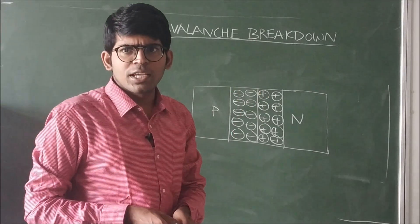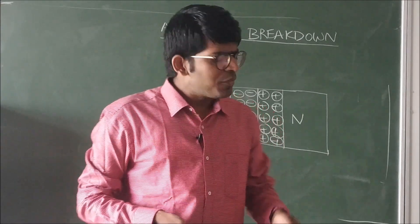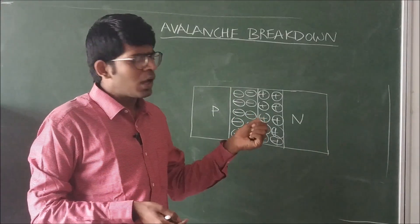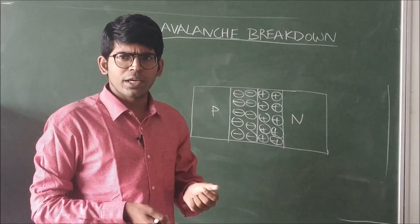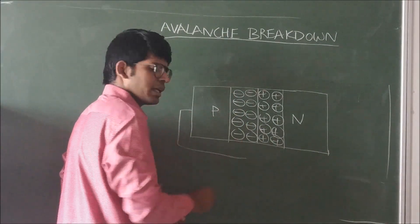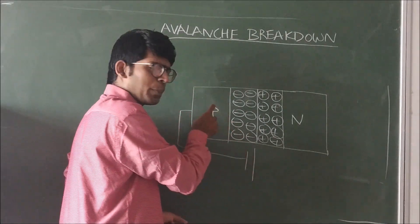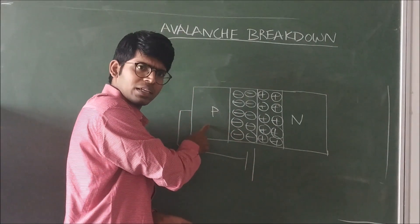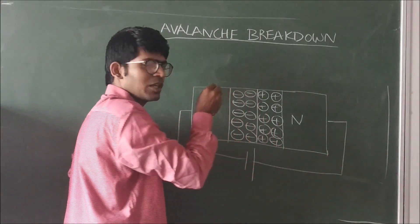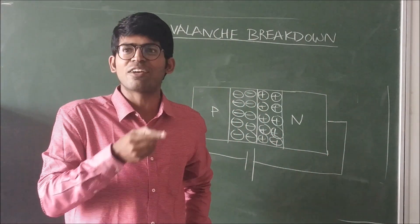In this class, we are discussing about avalanche breakdown. What is avalanche breakdown? When we are taking a PN junction diode and connecting it in reverse bias — the negative terminal of the battery is connected to the P-type semiconductor and the positive terminal is connected to the N-type semiconductor — the diode is connected in reverse bias.